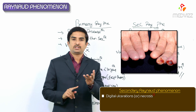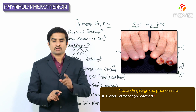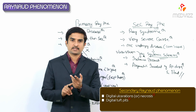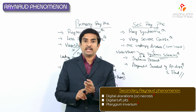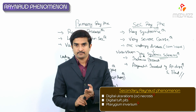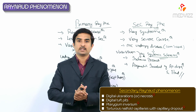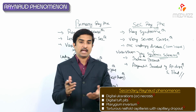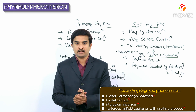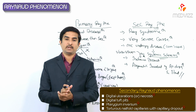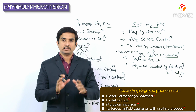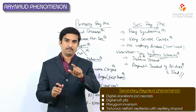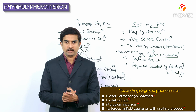In secondary Raynaud's phenomena, one can find digital ulcerations or necrosis, digital tuft pits, pterygium inversum, and tortuous nail fold capillaries with capillary drop-out. These findings are important distinguishing features of secondary Raynaud's phenomena.